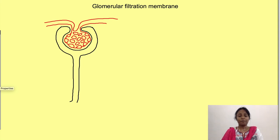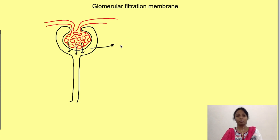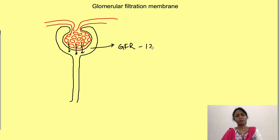The first step in formation of urine is filtration of the plasma at the level of the glomerulus. The rate at which the plasma filters from the glomerulus into the tubules is known as glomerular filtration rate, which is normally 125 mL per minute.